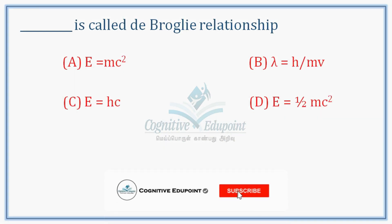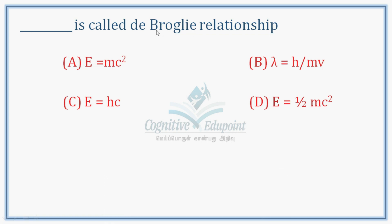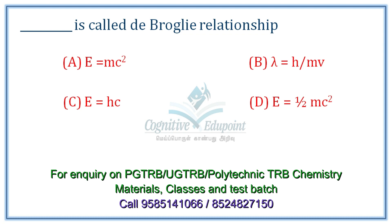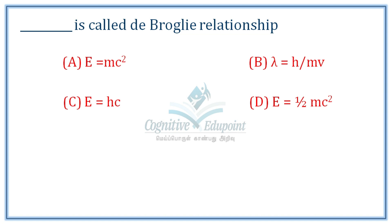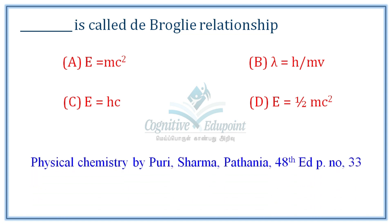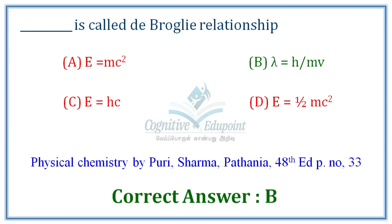The first question: which equation is called the De Broglie Relationship? The De Broglie Relationship explains the dual character of a moving particle. Lambda equals h divided by mv, where h is Planck's constant, m is the mass of the particle, and v is the velocity. Lambda is the wavelength. Correct answer: B.